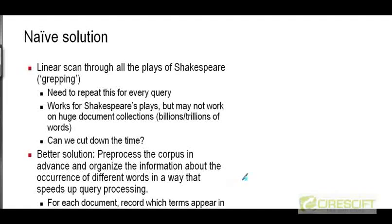Now the simplest possible solution you could think of is to use the Unix grep command or some similar command, or write a simple script that will do a linear scan through all the plays of Shakespeare one by one. For each document that you look at, you will check whether it contains the words Brutus and Caesar and whether the word Calpurnia is absent. If all three conditions hold, you return that document as part of the answer.